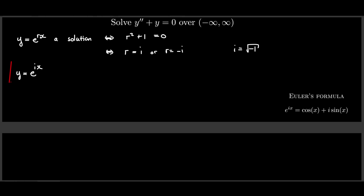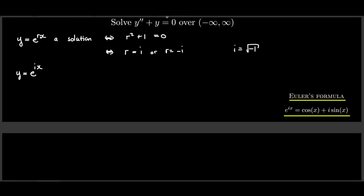The issue is that if e^(rx) is a solution, then we must say e^(ix) is a solution, but this requires knowing the exponential of a complex number. Luckily, this question was answered long ago — Euler's formula comes to the rescue, giving us an exact formula: e^(ix) = cos(x) + i·sin(x).